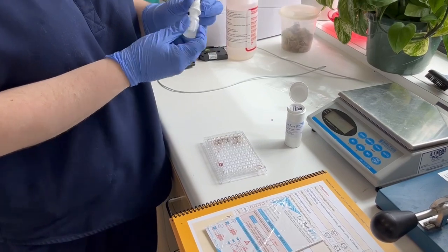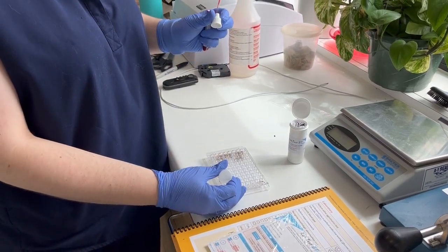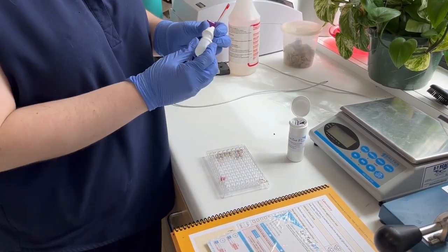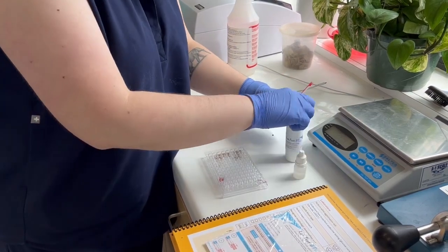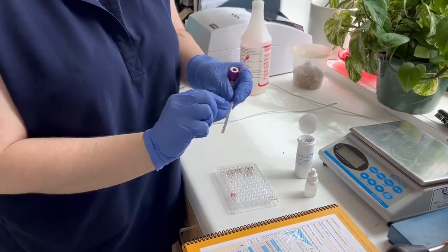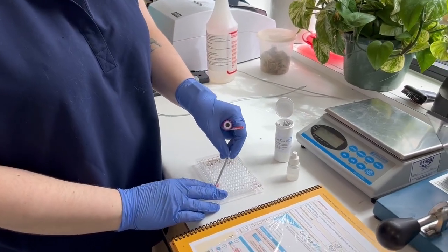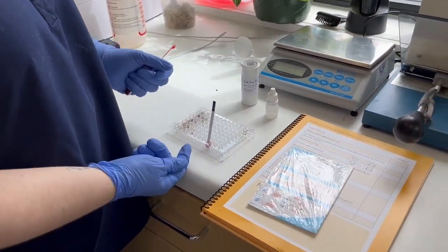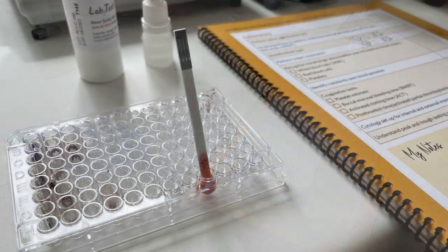So one drop of blood and three drops of this conjugate, and then you add a test strip with the arrows that point down towards the blood and give it a little mix. Then we're going to let it sit for the blood to wick up the test, and then we'll read our results.